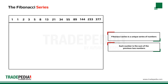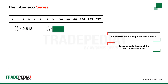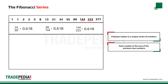The next thing we notice is that if we divide any two numbers next to each other, we find that they are connected through the same ratio. 55 divided by 89 is equal to 0.618. 89 divided by 144 is 0.618. 144 divided by 233 is 0.618. The same for 233 divided by 377.